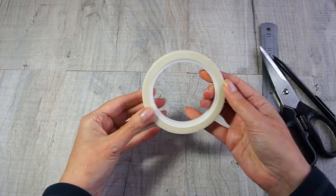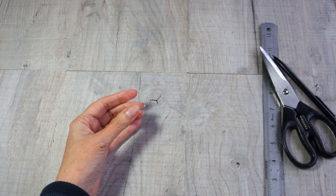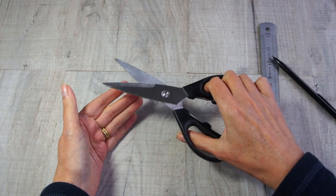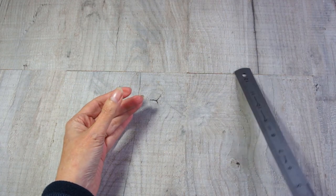Some masking tape, low tack's the best. It's just to hold it together while you're working. Some double sided tape to mount your finished design. Some scissors to cut your paper and your cardboard. A pencil and a ruler.